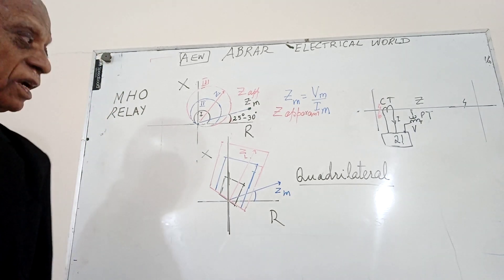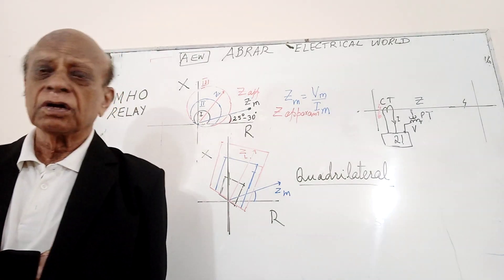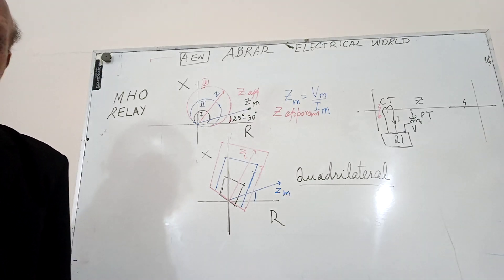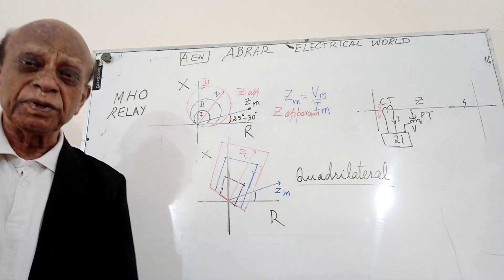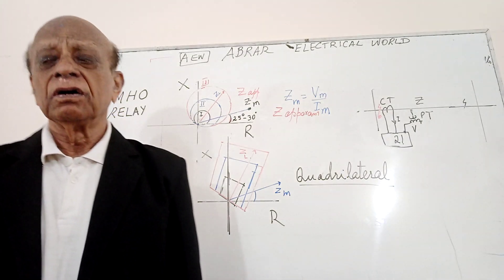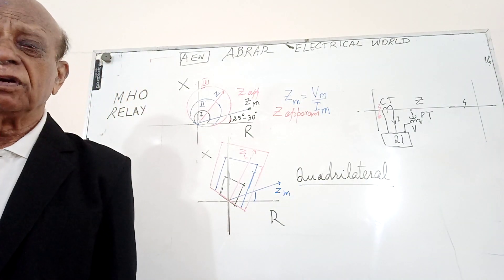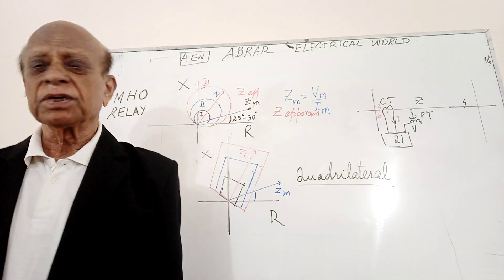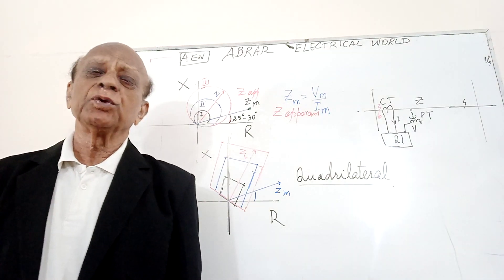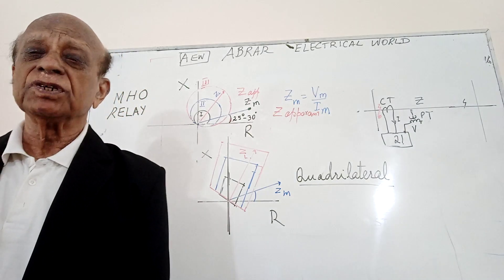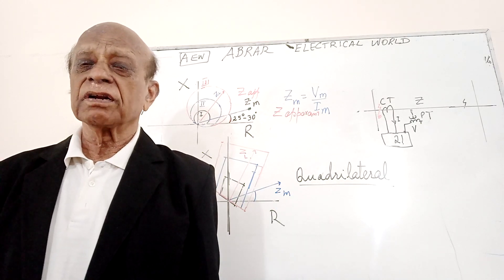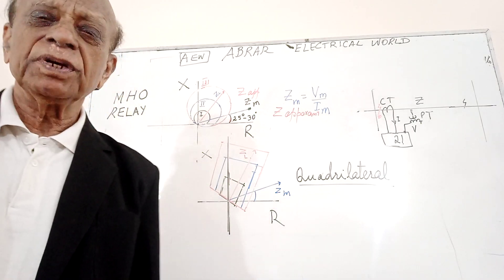After this, I will go to power swing blocking. Before covering the distance relay, I will first explain what power swing blocking is, and then I will cover how to implement power swing blocking. I will explain this using the same diagram I have drawn in the context of power system stability of the alternator or machine. Thank you very much.